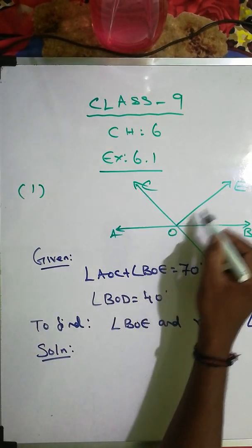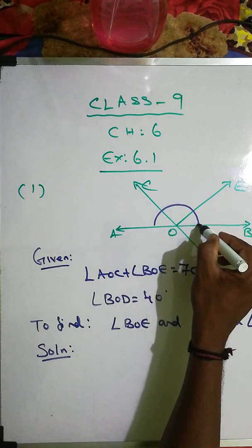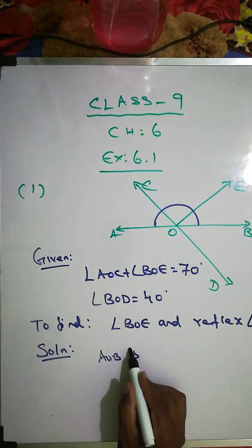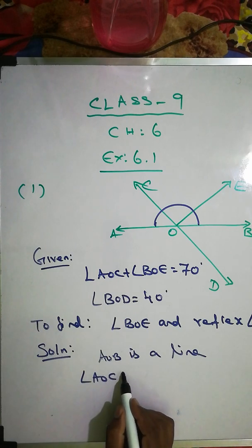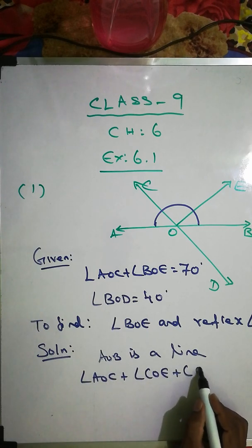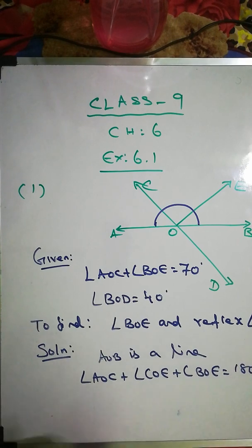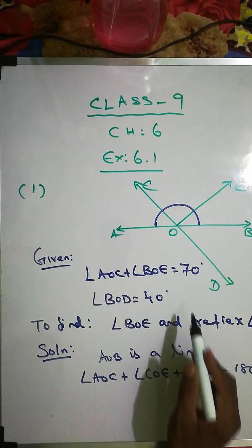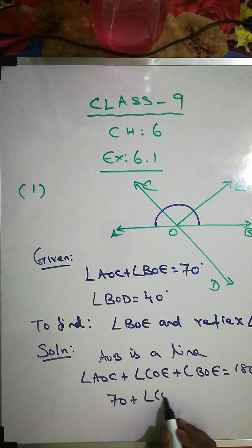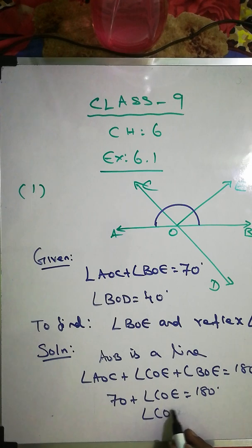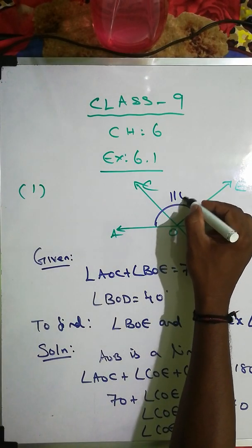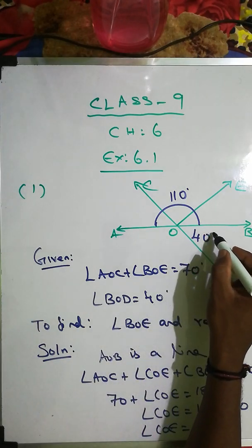Solution: You can see the diagram here. Angle AOC plus angle COE plus angle BOE equals 180 degrees because it's a linear pair — AOB is a line. So angle AOC plus angle COE plus angle BOE equals 180. Since AOC plus BOE is given as 70, we get 70 plus angle COE equals 180. Therefore angle COE equals 180 minus 70, so angle COE is 110 degrees.